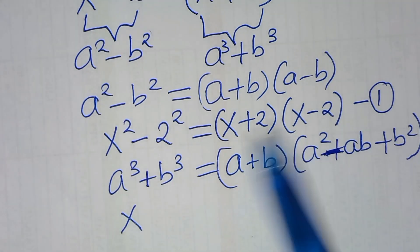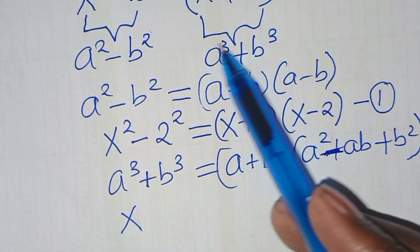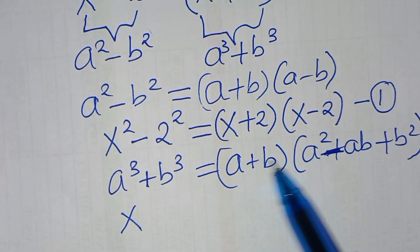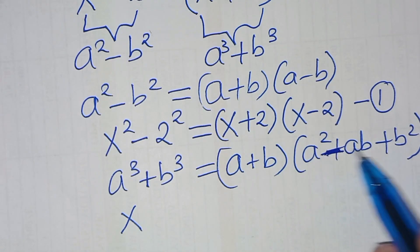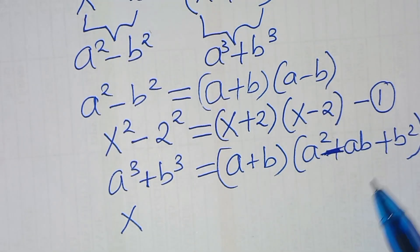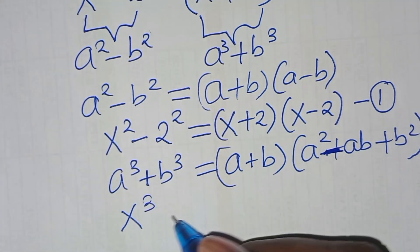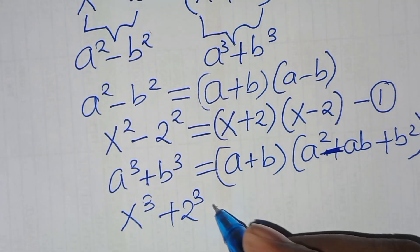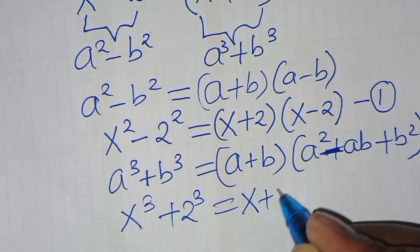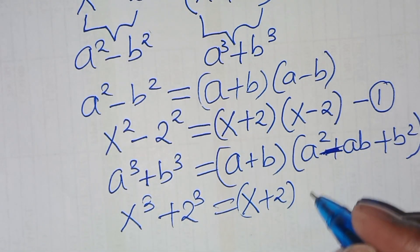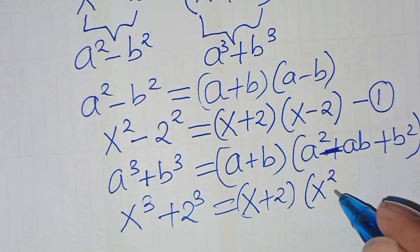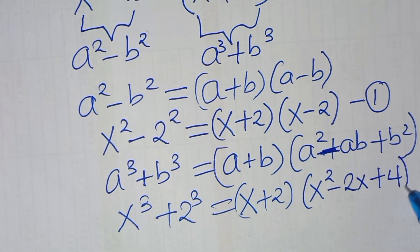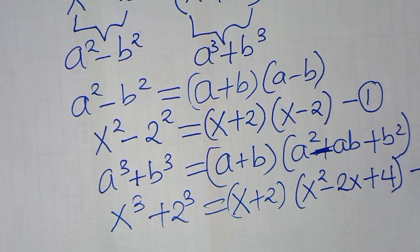The second part is the sum of two cubes: a cubed plus b cubed, which we can express as a plus b times a squared minus ab plus b squared. So x to power 3 plus 2 to power 3 is the same thing as x plus 2 times x squared minus 2x plus 2 squared, which is equal to 4. Let's call this equation 2.